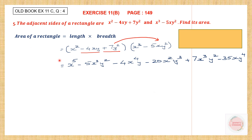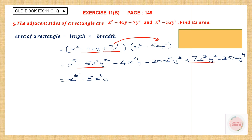Let's look for like terms. Here we have x to the power of 5 — no other one. Then we have x cubed y squared here and x cubed y squared here as well. Let's take these two together: minus 5x cubed y squared and plus 7x cubed y squared.